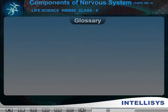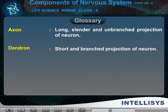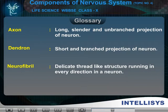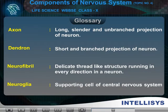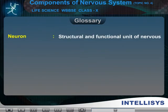Glossary. Axon — long, slender and unbranched projection of neuron. Neurofibril — delicate thread-like structure running in every direction in a neuron. Neuroglia — supporting cell of central nervous system other than neuron. Neuron — structural and functional unit of nervous system.